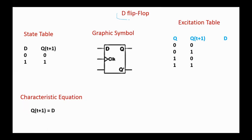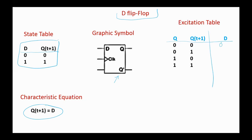Next, the D flip-flop. Here is the graphic symbol for the D flip-flop, and here is the state table. You remember that Q(T+1) equals D. And here is the characteristic equation for the D flip-flop. It's easy to find out that D in this case equals Q(T+1). Here is the excitation table for the D flip-flop.